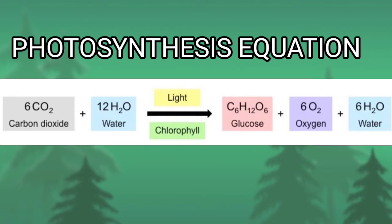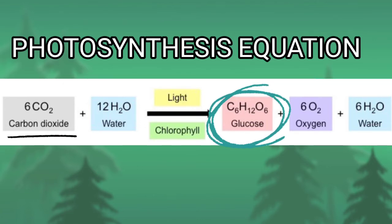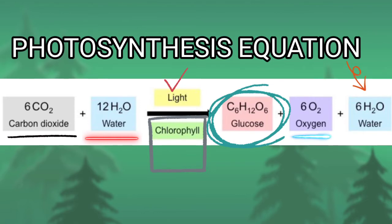When we observe this equation, to produce one glucose molecule, six molecules of carbon dioxide and 12 water molecules are utilized. The energy to drive this reaction is obtained from sunlight, and the sunlight is captured by chlorophyll pigment which is present in the chloroplasts. Along with the glucose molecule, water and oxygen are also produced as byproducts, which are released into the atmosphere.